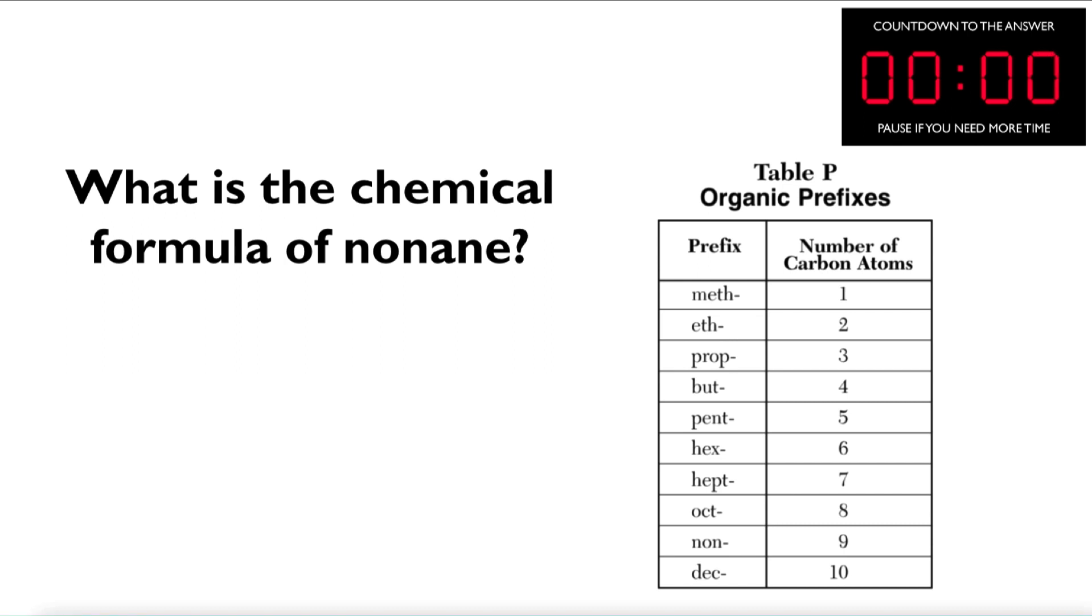So the prefix non is for 9, so 2 times 9 is 18, plus 2 is 20. So C9H20 would be our chemical formula.